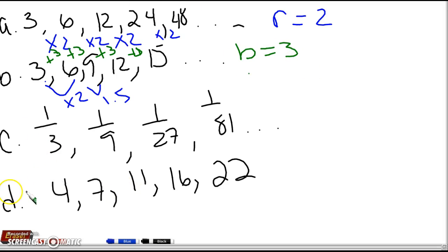Alright, let's do part C. So I have 1/3, 1/9, 1/27, 1/81, and again, I'm going to divide. So I'll do 1/9 divided by 1/3, which is the same thing as 1/9 times 3 over 1, and I get 1/3. So let's do the next one. We have 1/27 divided by 1/9, which is the same thing as times 9 over 1. And again, I get 1/3.